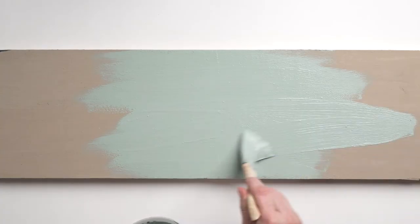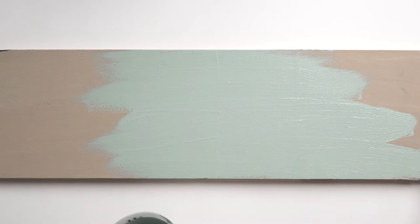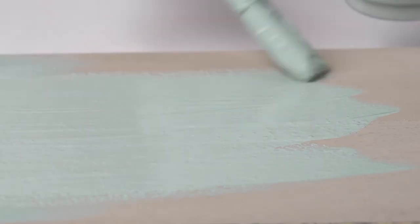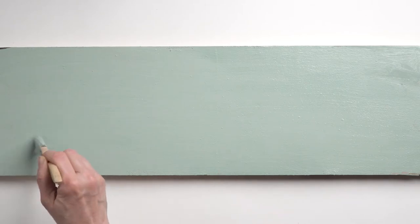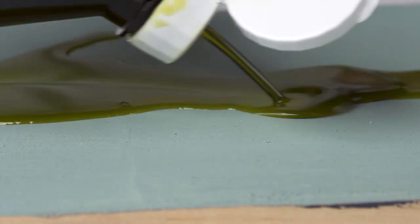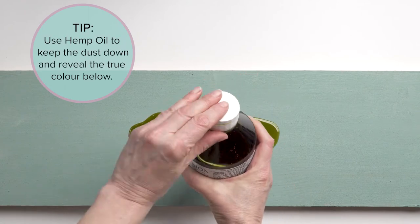second contrasting color is sea glass. Once dry, after about 30 minutes, it's time to start distressing using a 220-grit sanding pad. Here's a little tip: pouring hemp oil onto the surface while you are distressing will help